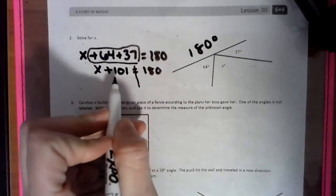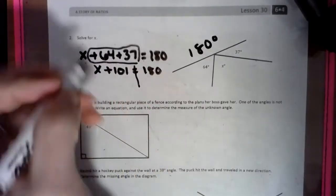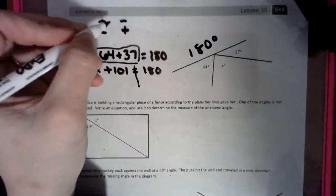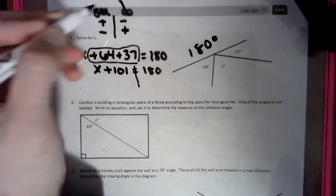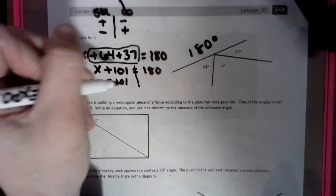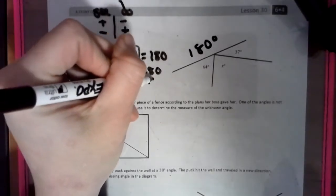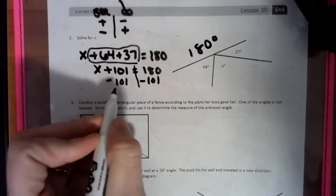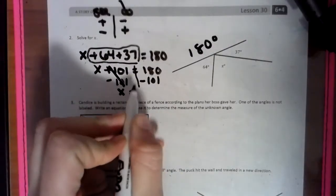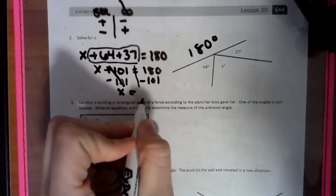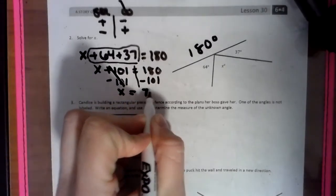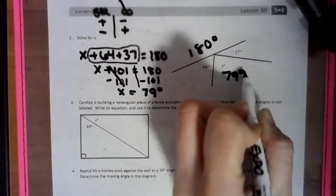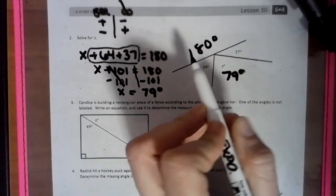With an equation, when we see something, we do the opposite. So when we see addition, we do subtraction. When we see subtraction, we do addition. Whatever we do to one side, we're going to do to the other side of this equation just to keep it balanced — it's kind of like a balance beam. So this crosses out, we're left with x. We take 101 away from 180 and we get 79 degrees. So our missing angle is 79 degrees. If we re-add these up, we'll get 180.